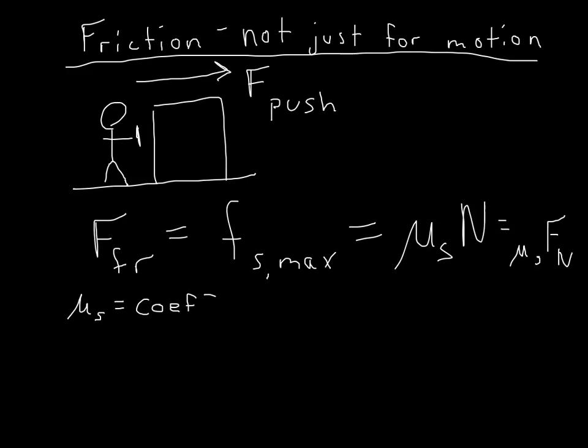So mu s is equal to the coefficient of friction. But in this case, that little s right there tells us it's for static friction. It's for the frictional force between two objects that are not moving. Coefficient of static friction.